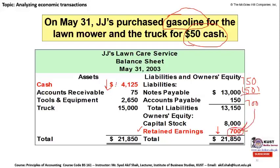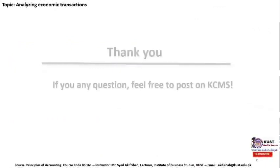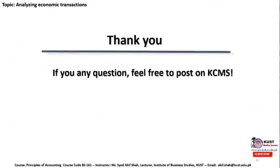Summing up all assets following the order of liquidity, the total asset balance is $21,850, and the total liabilities and owner's equity also equals $21,850. Both sides are equal and the accounting equation is fulfilled. This concludes the analysis of economic transactions for JJ Lawn Care Service.